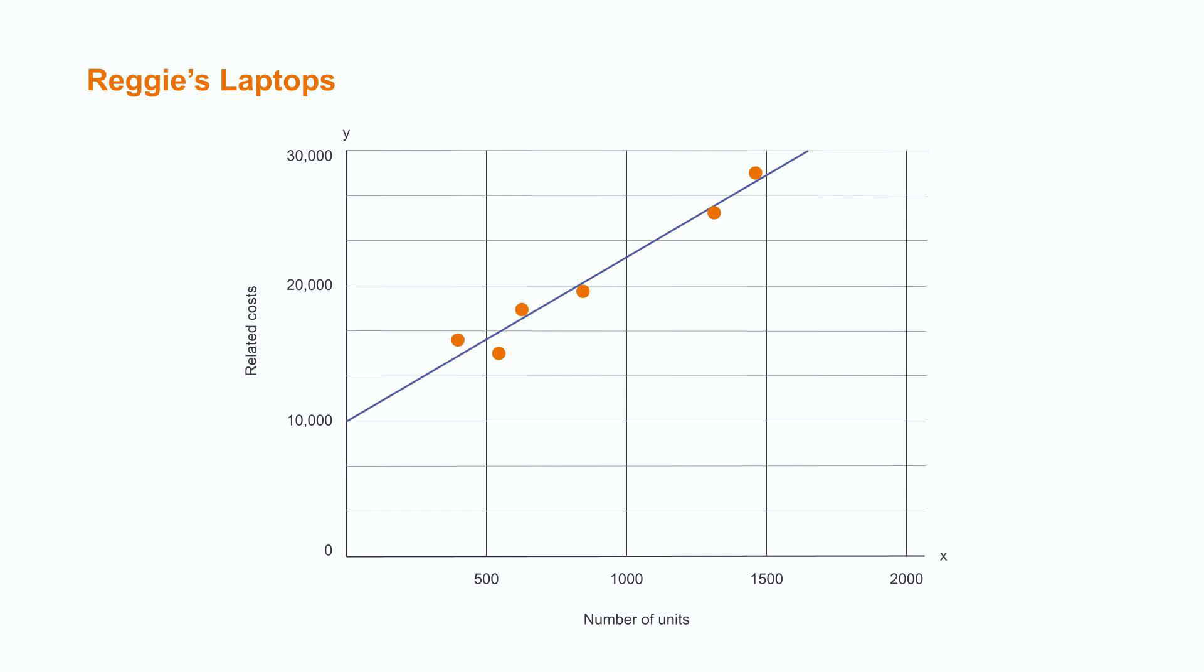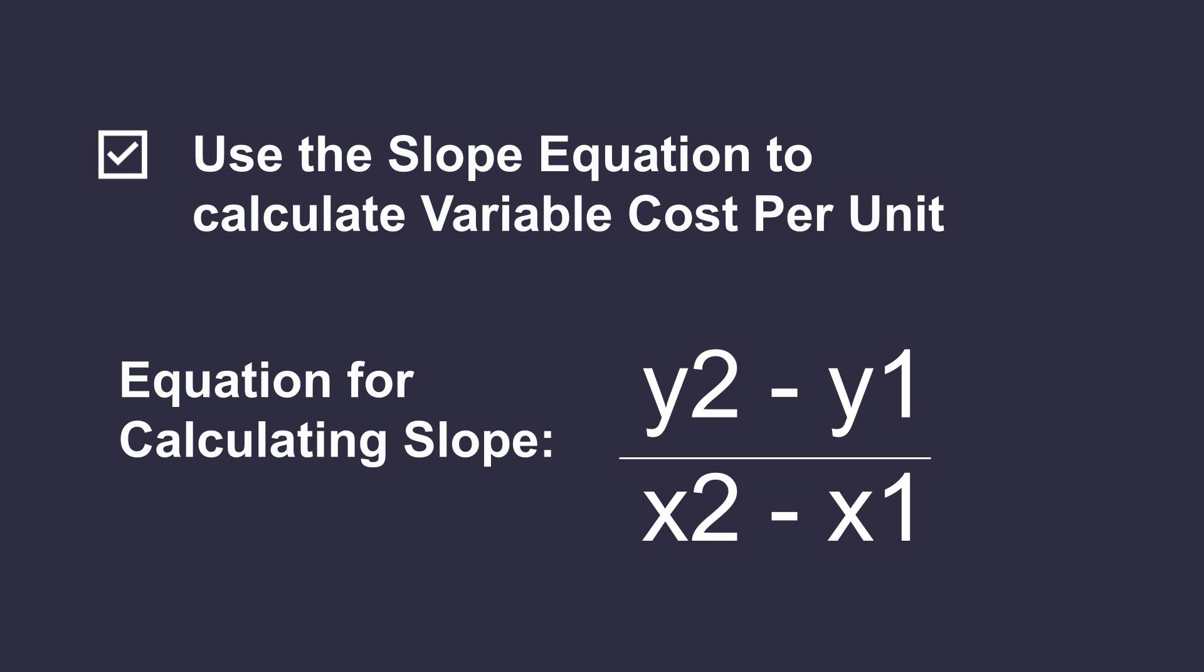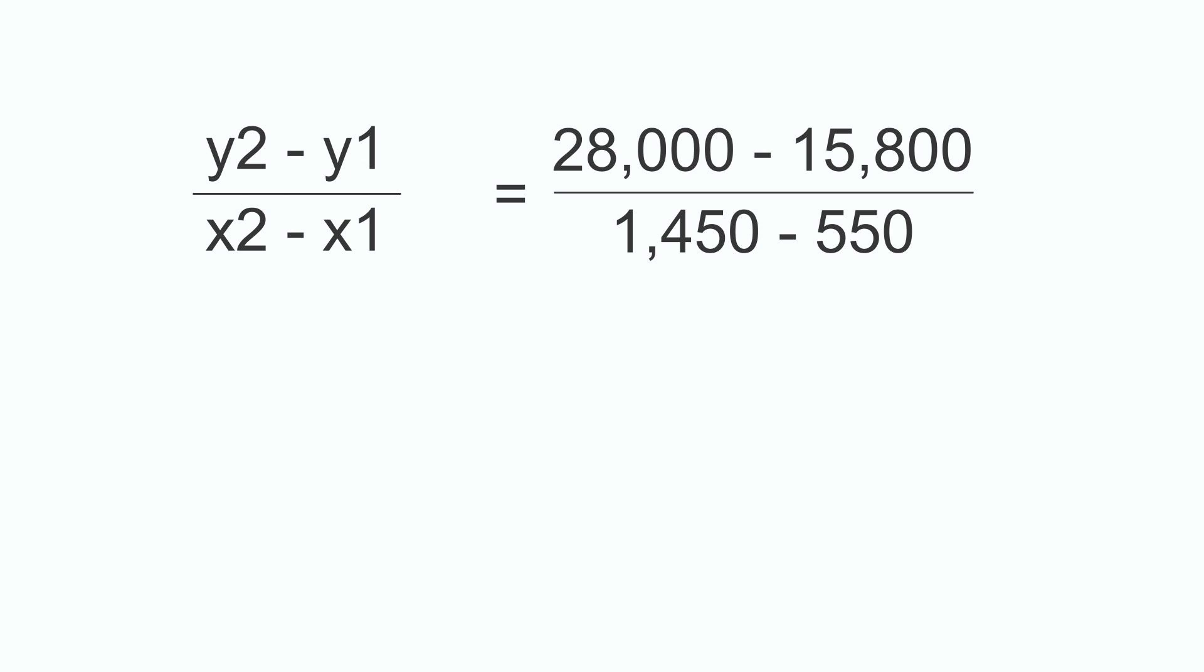The line crosses the y-axis at approximately $10,000. This is where there is zero activity, which represents the total fixed cost of $10,000. The slope of the line, which in this case will show us the variable cost per unit produced, can be found using the equation for calculating slope we looked at a few moments ago, y2 minus y1 divided by x2 minus x1. We plug in the numbers for our y values on the graph. Let's take the highest and lowest y values, $20,000 minus $15,800.